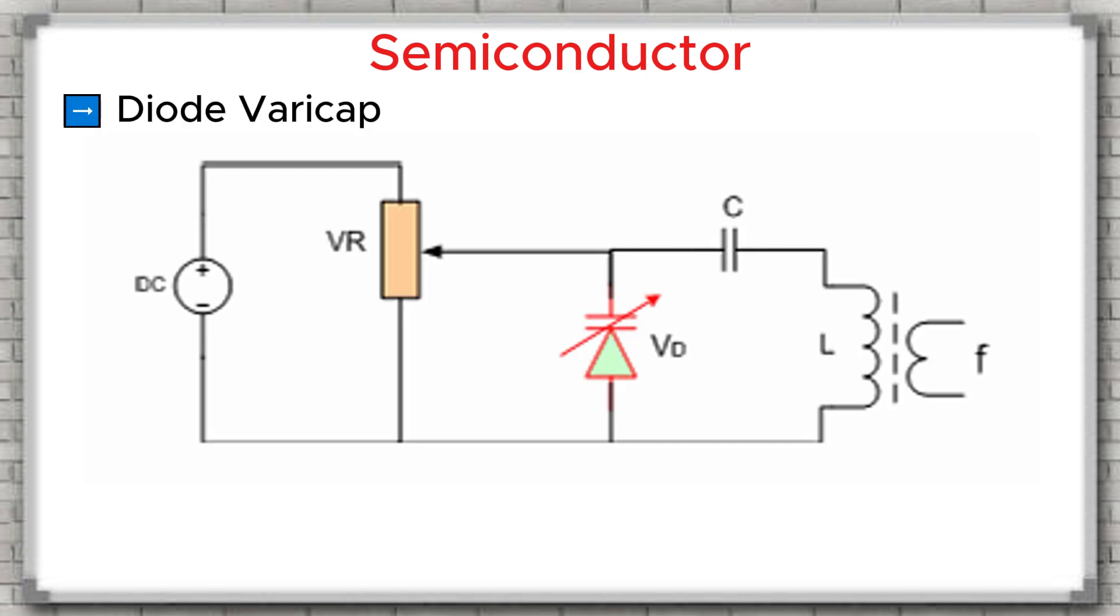Varicap Diode, Variable Capacitance Diode. The Varicap diode, also called the Variable Capacitance Diode, is a type of diode that has a capacitance similar to a capacitor. This capacitance changes when we vary the reverse voltage applied to the varicap diode. Application of varicap diodes, they are commonly used in resonant circuits. For example, as shown in the circuit above, when we adjust the variable resistor VR, the reverse voltage applied to the varicap diode changes. This causes the capacitance of the diode to change, and as a result, the resonant frequency of the circuit also changes. Varicap diodes are widely used in television channel tuners, and in circuits where the resonant frequency needs to be controlled by voltage.